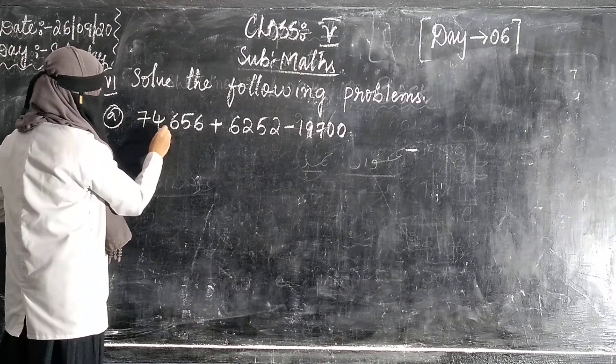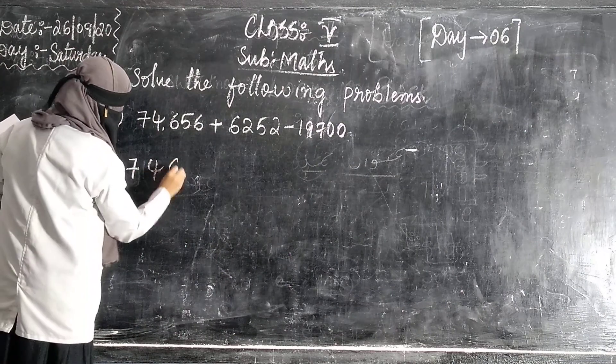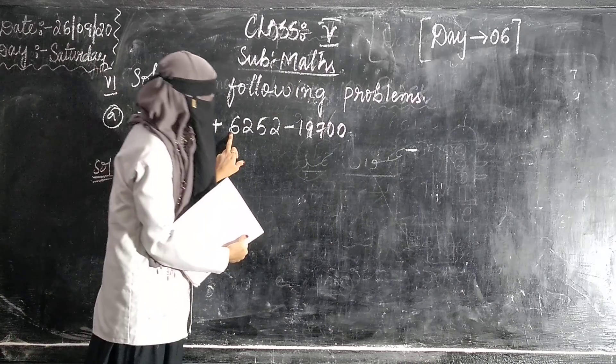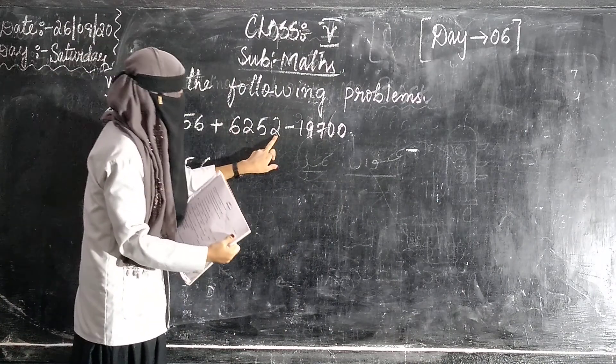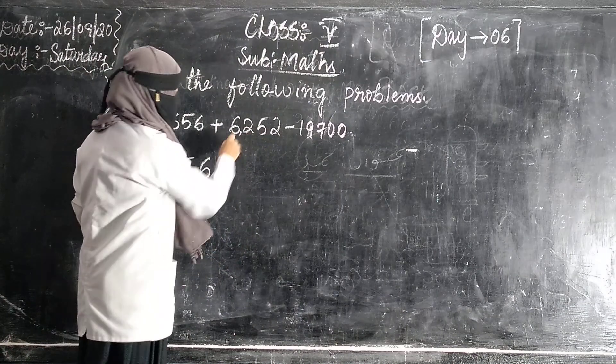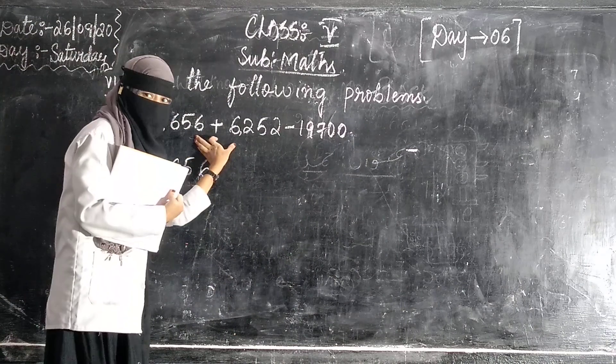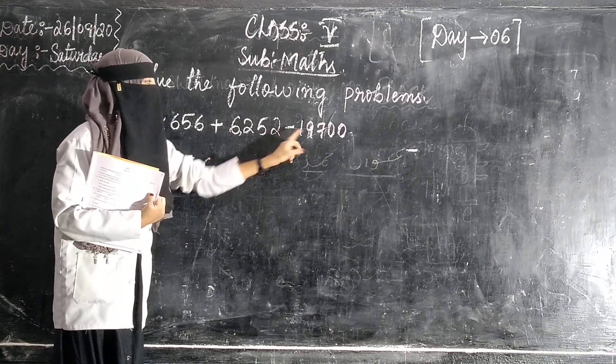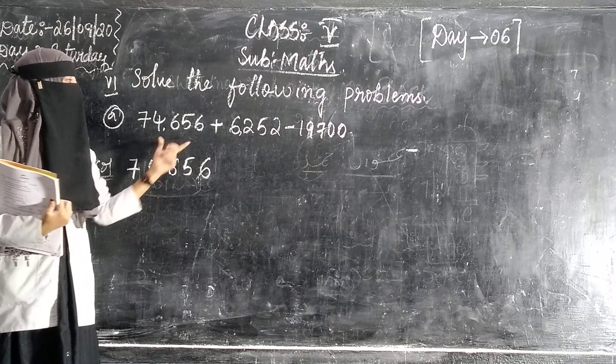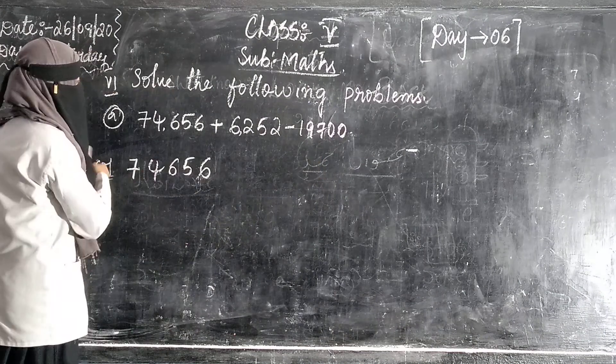First, 74,656 plus 6,252 minus 19,400. Two numbers ko plus karna hai. Plus karke, ye two numbers ke jo answer hoga, uske baad ye number subtract karna hai. So first we will add.